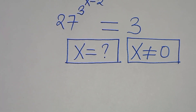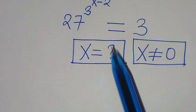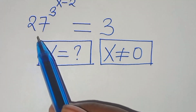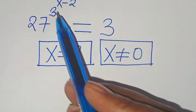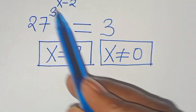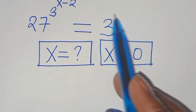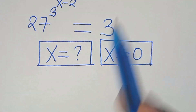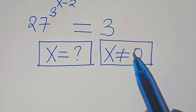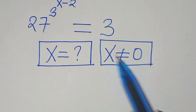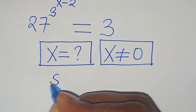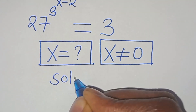Hello everyone, you're welcome to solve this nice math problem: 27 raised to the power of 3 raised to the power of x minus 2, equals 3. What is the value of x, given that x is not equal to zero? Let's present the solution from here.